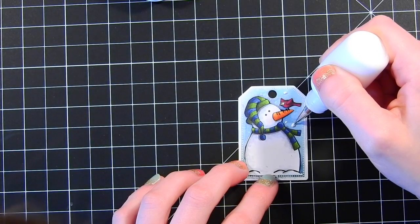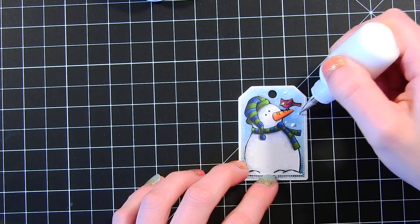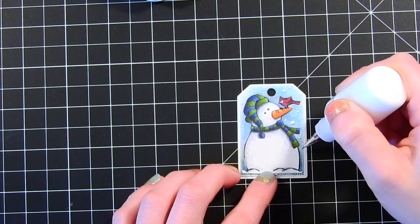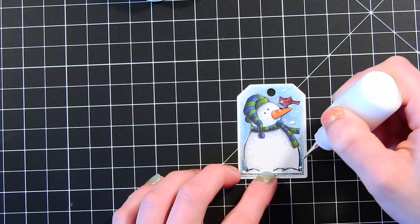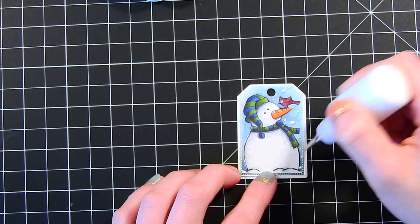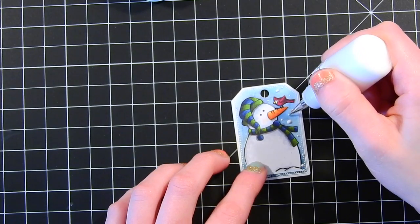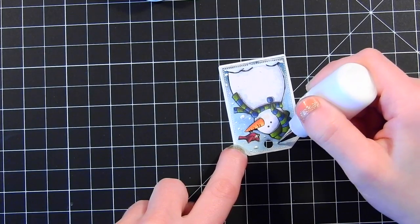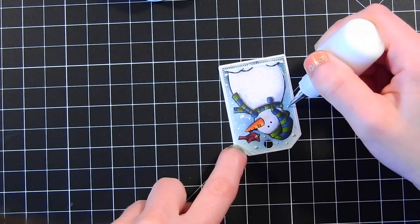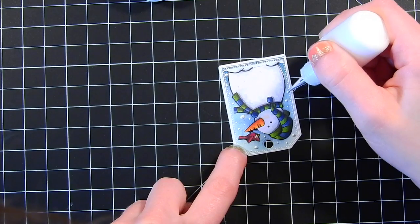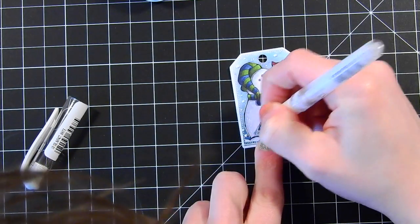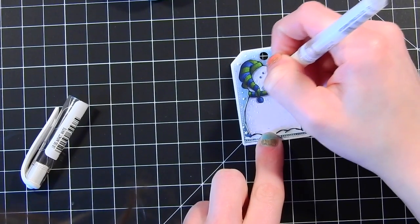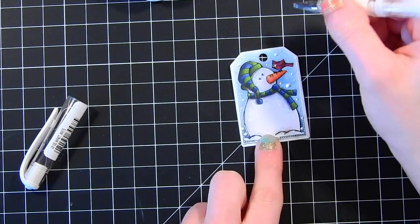Using some enamel accents I put that into a fine tip bottle as well because I like the precision tip that these bottles have. I'm just adding in some snow droplets to the background of the snowman because he didn't have any when you stamped him. I'll just keep adding those around in different places. I'm also taking my white gel pen and I'm adding some dots around the shadowing of my snowman.